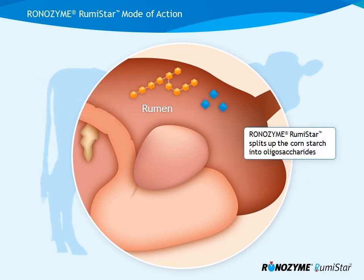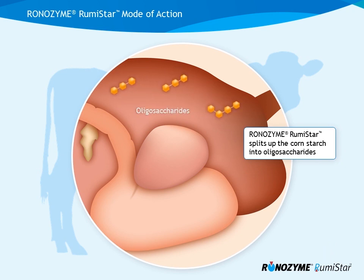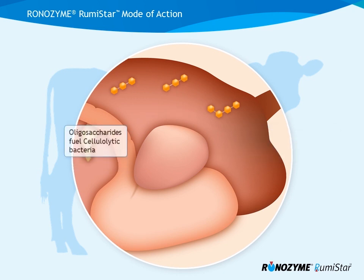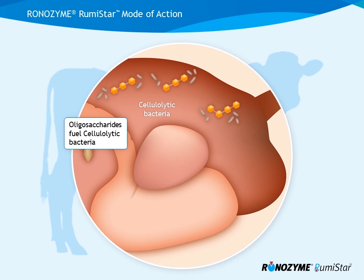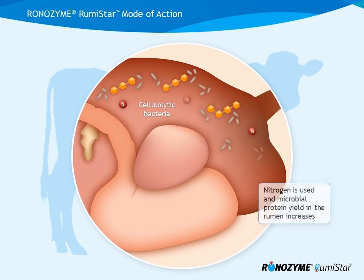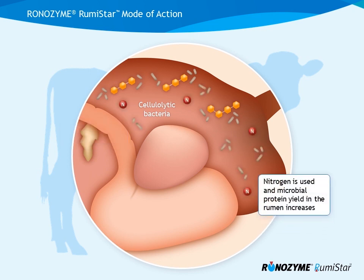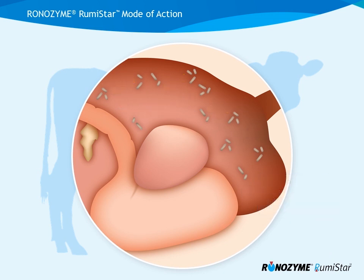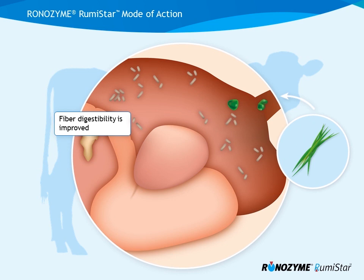Ronozyme Rumistar splits up the cornstarch into oligosaccharides. Oligosaccharides fuel cellulolytic bacteria. Nitrogen is used and microbial protein yield in the rumen increases. Fiber digestibility is improved.